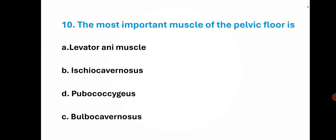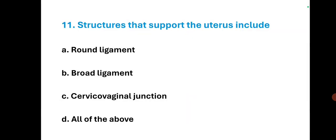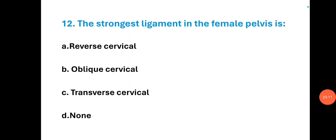The most important muscle of the pelvic floor is — the right option is A — levator ani muscle. Structures that support the uterus include — the right option is D — all of the above: round ligament, broad ligament, and cervicovaginal junction.